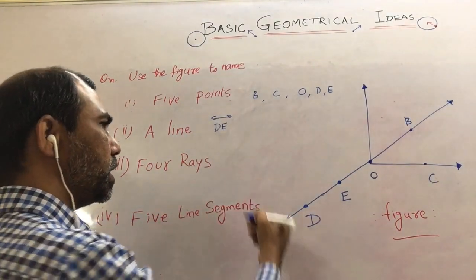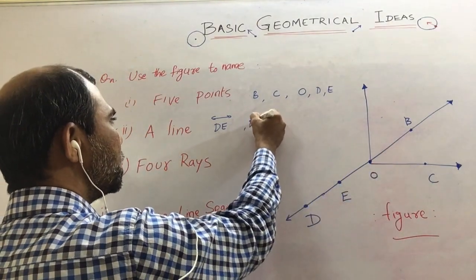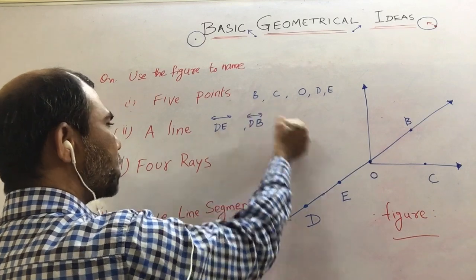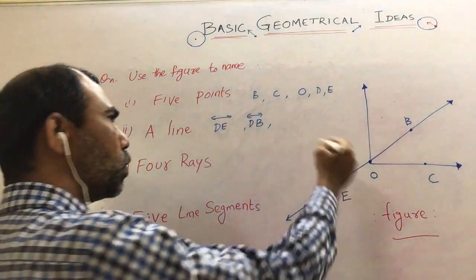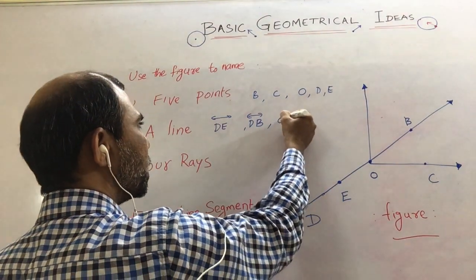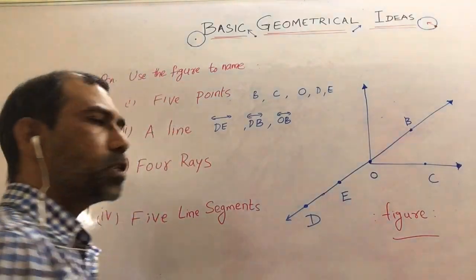You can represent as DE and DB also you can represent as a straight line. You must write this notation and OB also you can write as well as OB as a straight line.